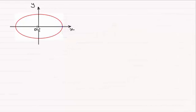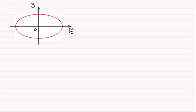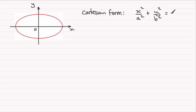Now if we take an ellipse and put it on axes x and y, then it can be shown that the Cartesian form of the equation is x squared over a squared plus y squared over b squared equals 1, where a and b are constants.